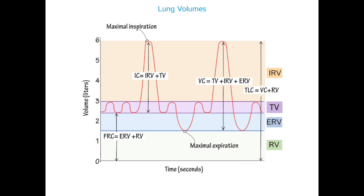Now all volumes have been covered along with inspiratory capacity. What is vital capacity? We have four capacities — three main ones and functional residual capacity. Vital capacity includes everything except residual volume: tidal volume plus inspiratory reserve volume plus expiratory reserve volume — all the volumes essential for functioning — giving approximately 4600 ml. Total lung capacity (TLC) equals vital capacity plus residual volume, giving 5800 ml, approximately 6 liters.